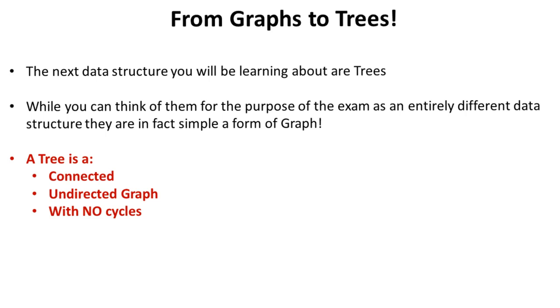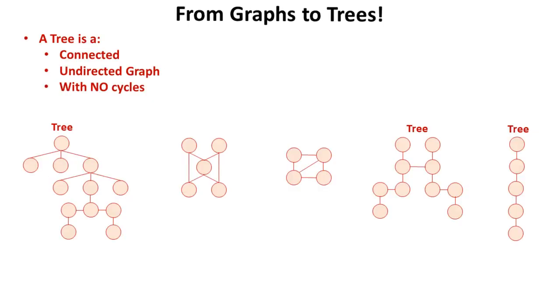A tree is a connected, undirected graph that has no cycles. What does that mean?